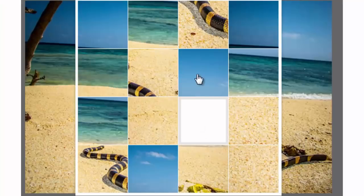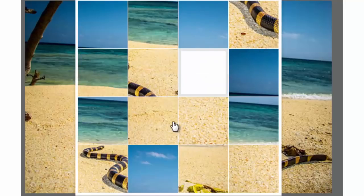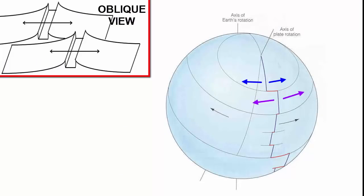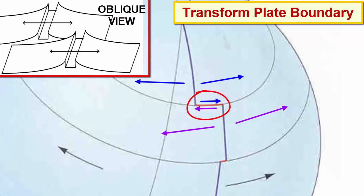That leaves one remaining plate boundary to discuss: transform, where plates slide past each other. There is no way to have plate motion moving apart and together without having some edges slide past each other. When we look at divergent plate boundaries, we remember that the tearing apart of the lithosphere has to accommodate a spherical surface—like seams on a baseball. To accommodate divergent motion along ridges on a spherical surface, the ridges break into sections and each section is offset from the next one by a transform boundary.